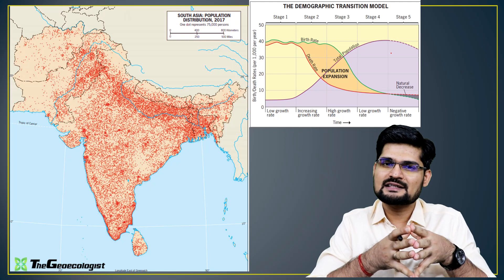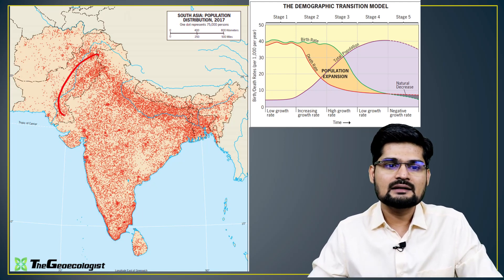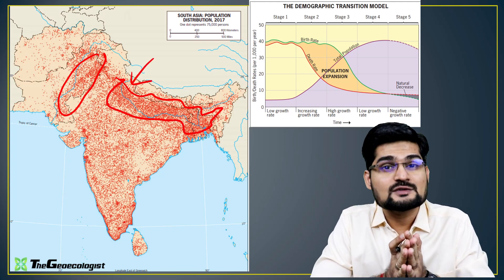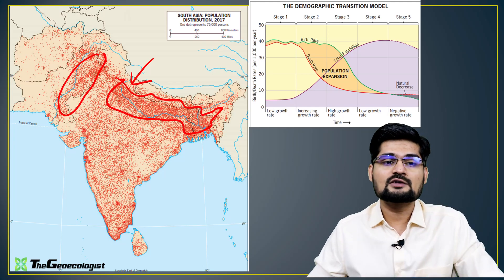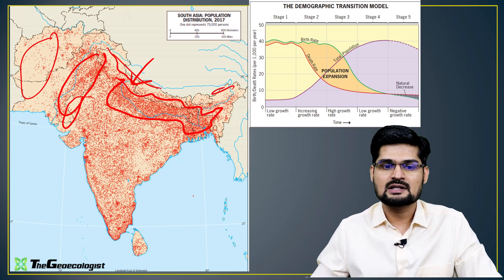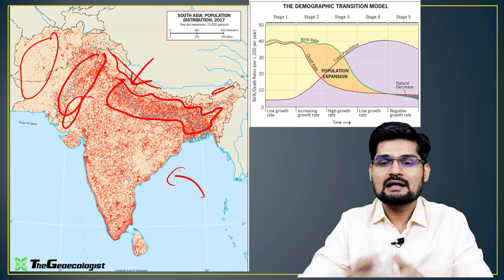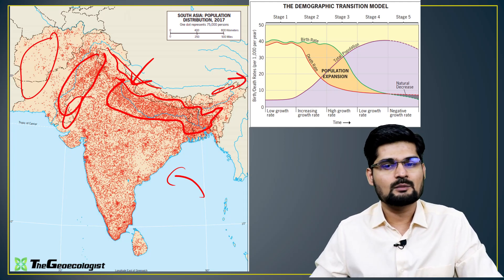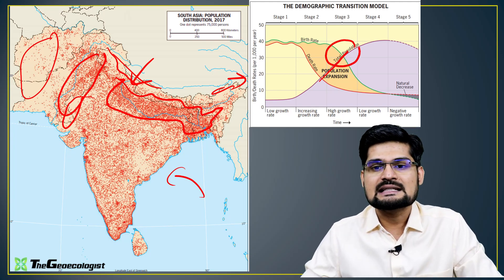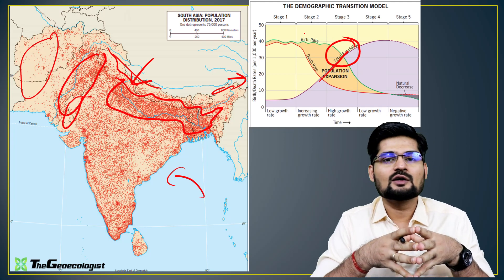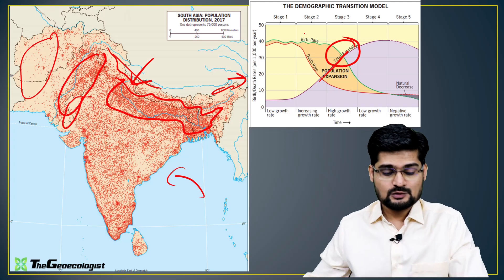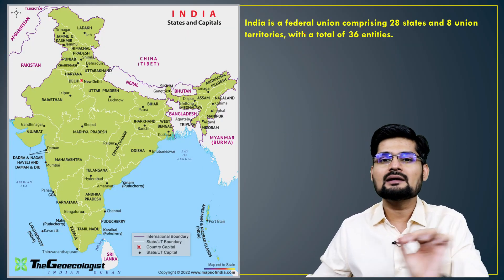In terms of population geography, the Indus Valley and Gangetic-Brahmaputra valley are among the most densely populated areas in the world, while mountainous and desert regions remain sparsely populated. According to the demographic transition model, the region is still around Stage 3 with a huge population explosion ongoing. India is soon going to overtake China as the world's most populous country.